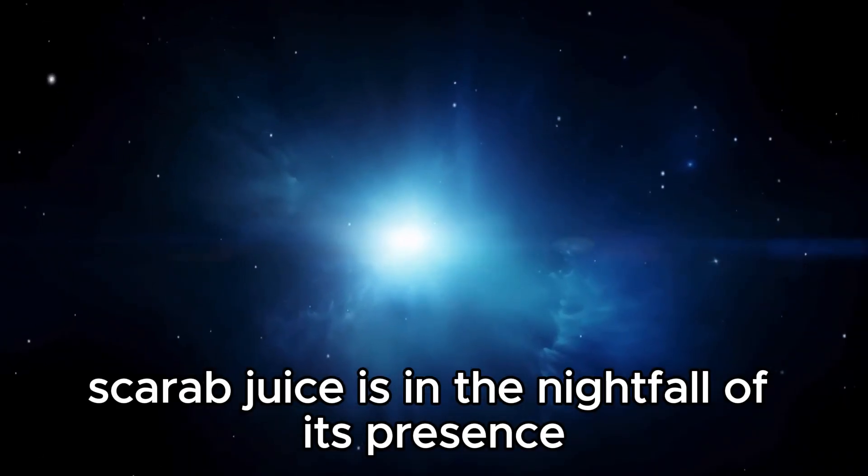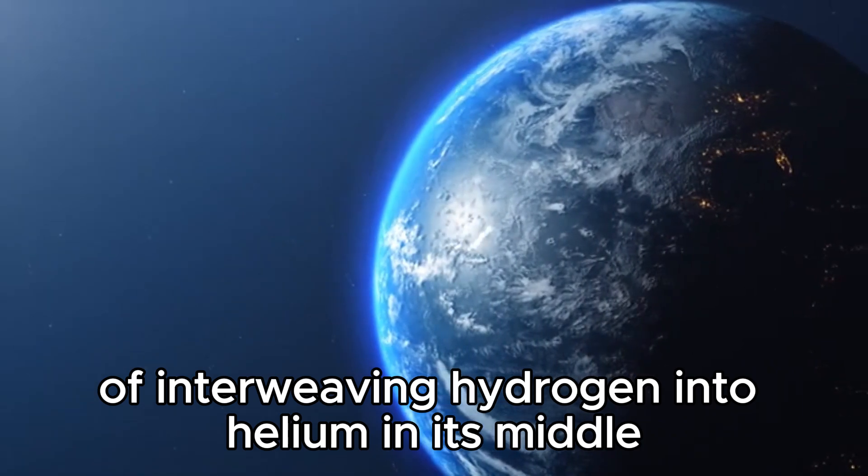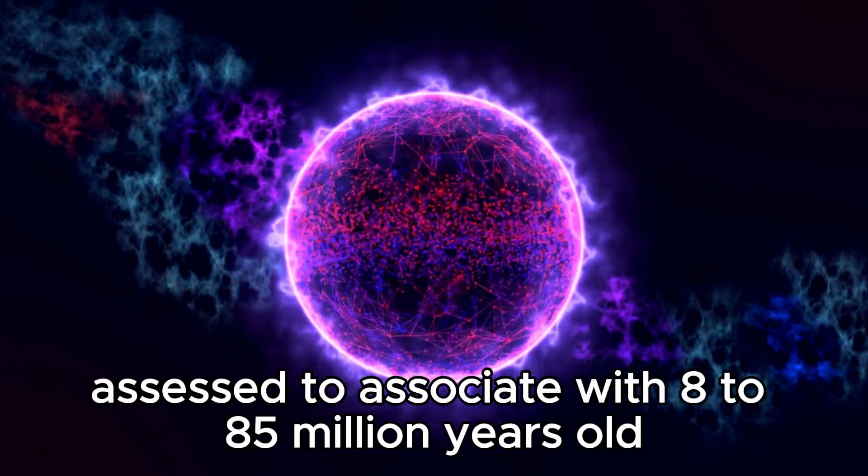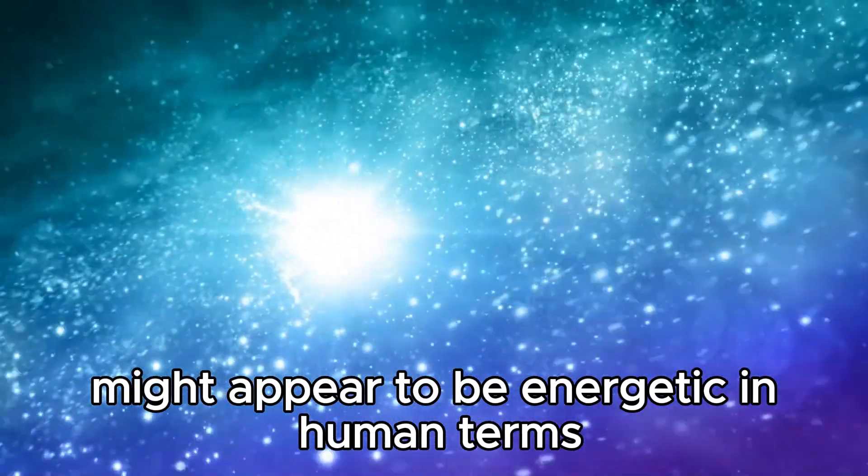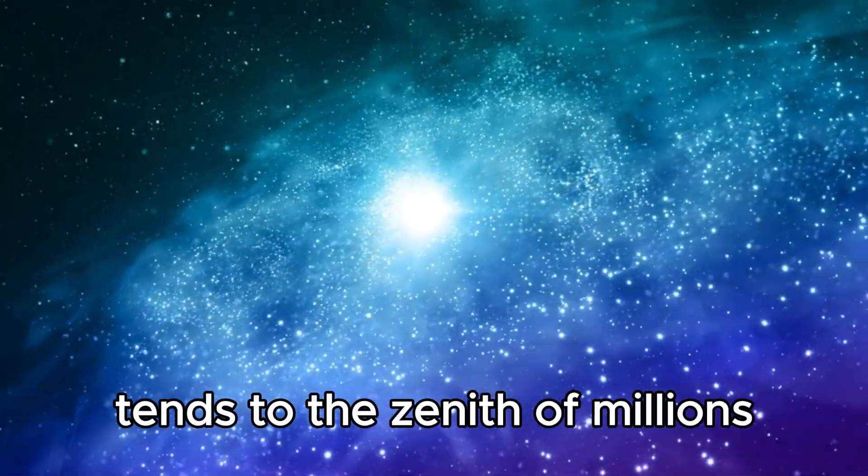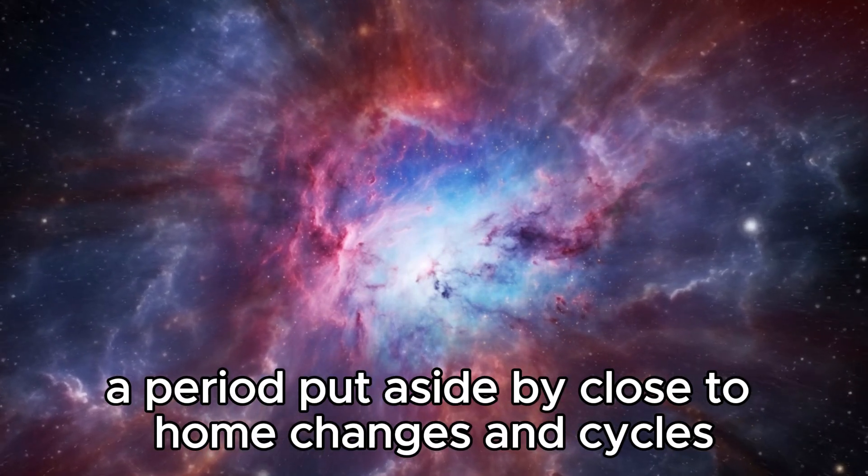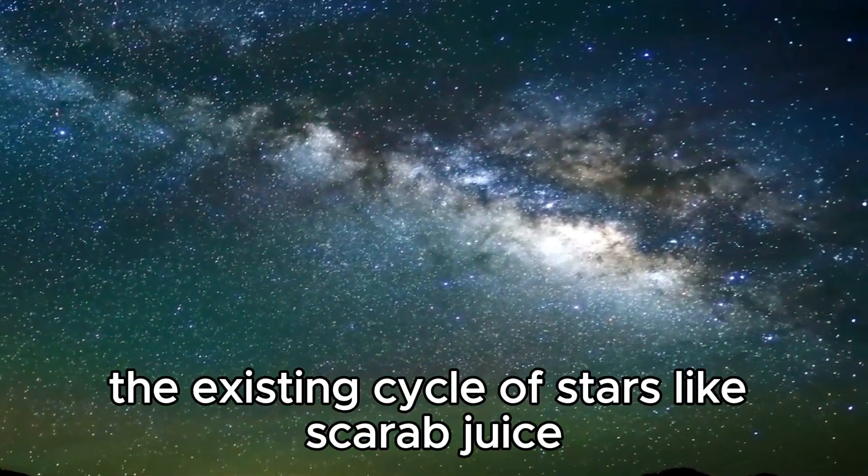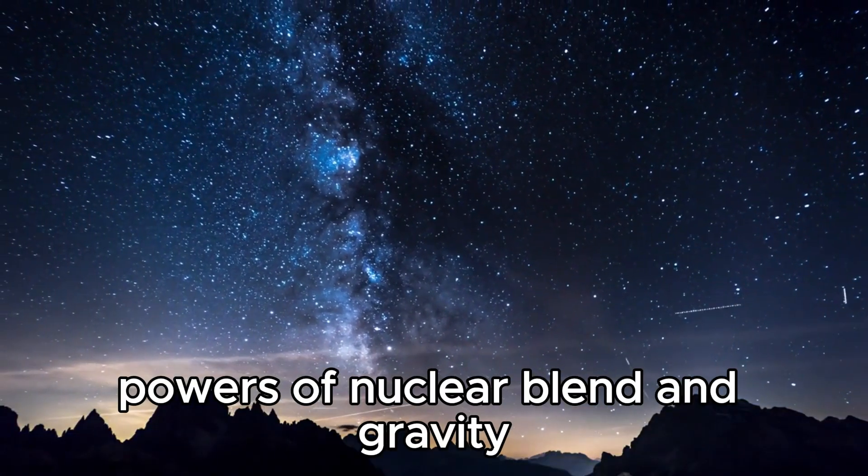Betelgeuse is in the twilight of its existence, a phase marked by expansion and cooling following eons of fusing hydrogen into helium in its core. This star, estimated to be around 8 to 8.5 million years old, might appear young in human terms, yet is ancient in terms of stellar lifetimes. Its current red supergiant stage represents the culmination of millions of years of stellar evolution, a period marked by dramatic transformations and processes.